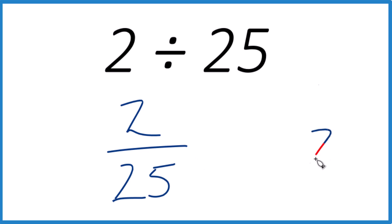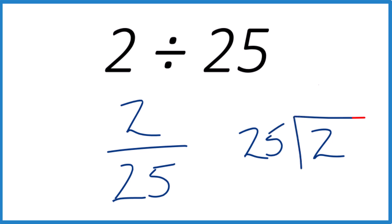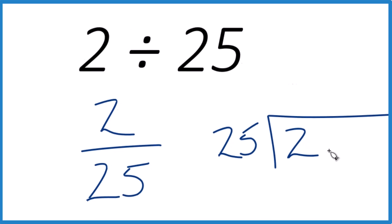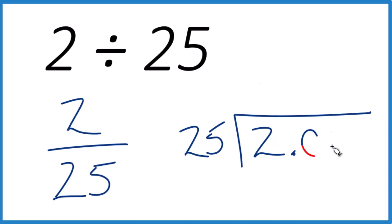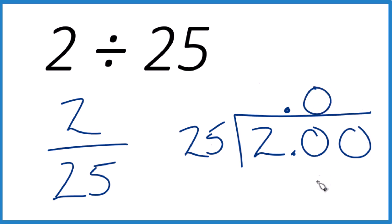So let's take 2 here and see how many times 25 goes into 2. It doesn't go into 2, so we write 2.0 — as long as we put a decimal point up here. 25 doesn't go into 20, so let's put a 0 here, move over one and put another 0 here.